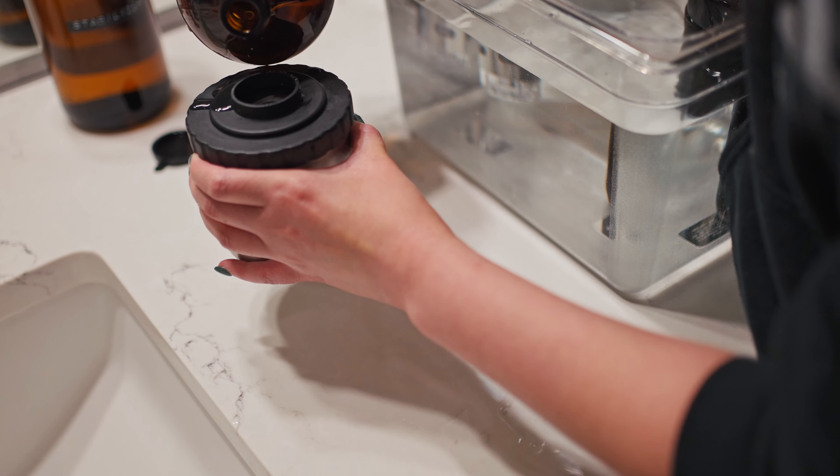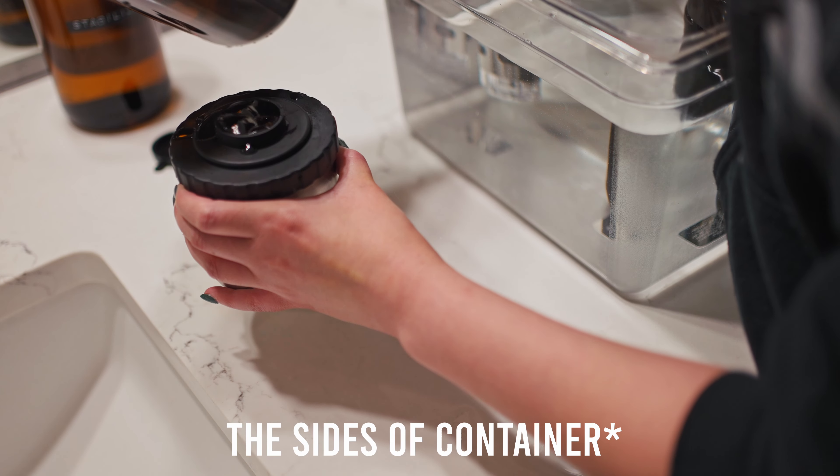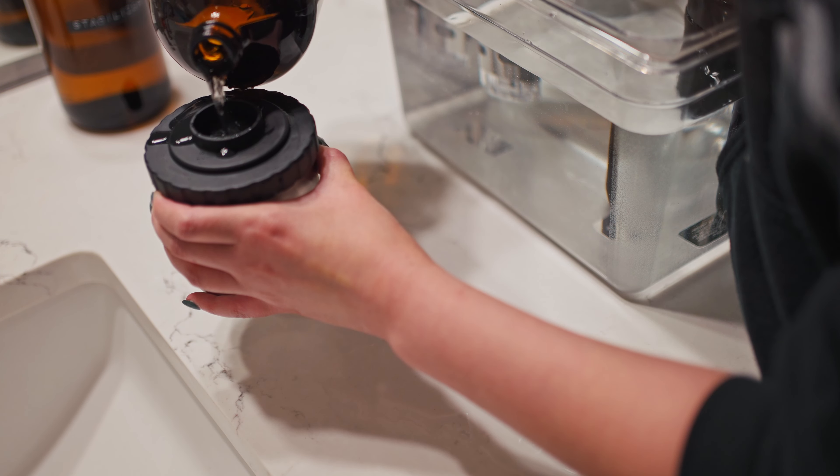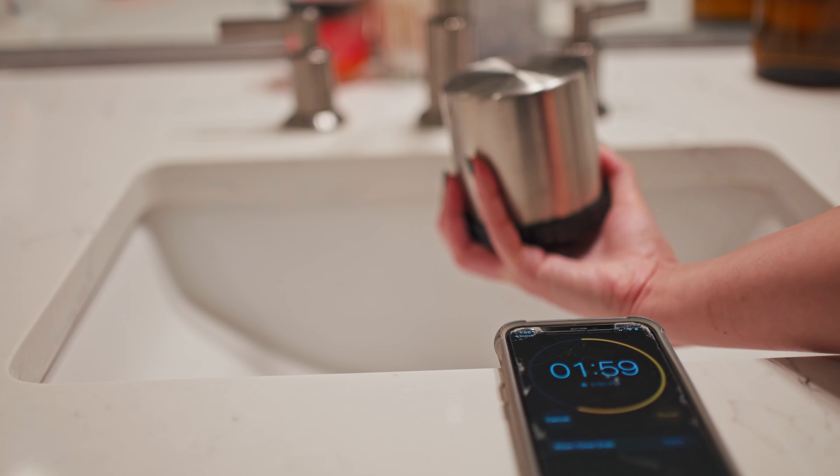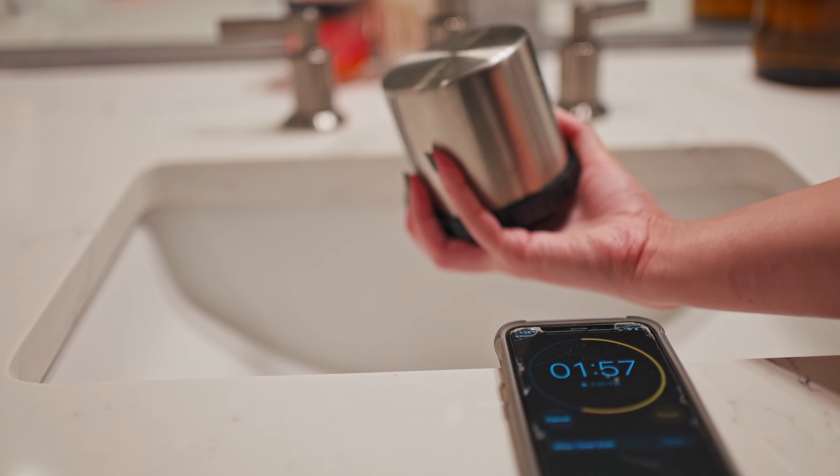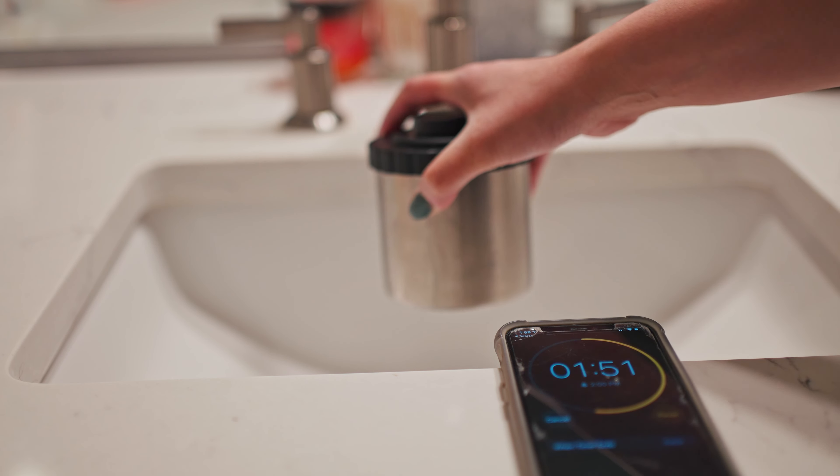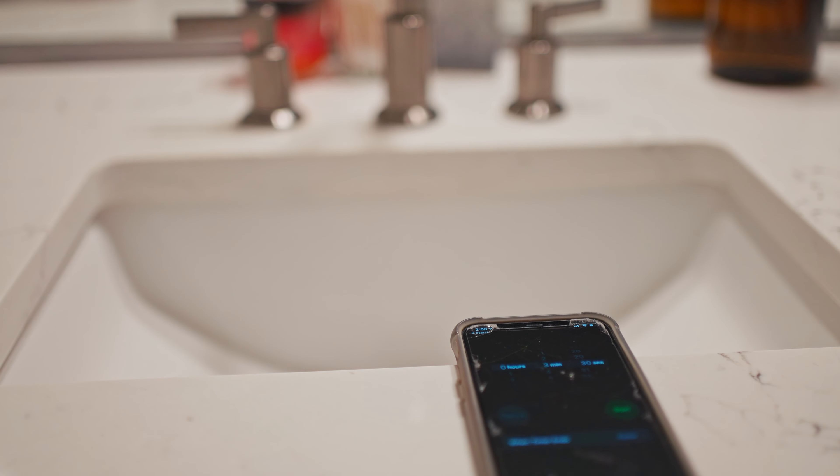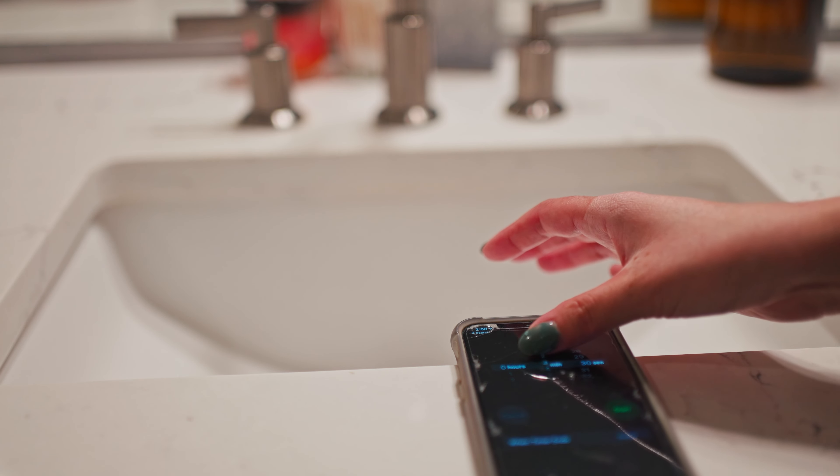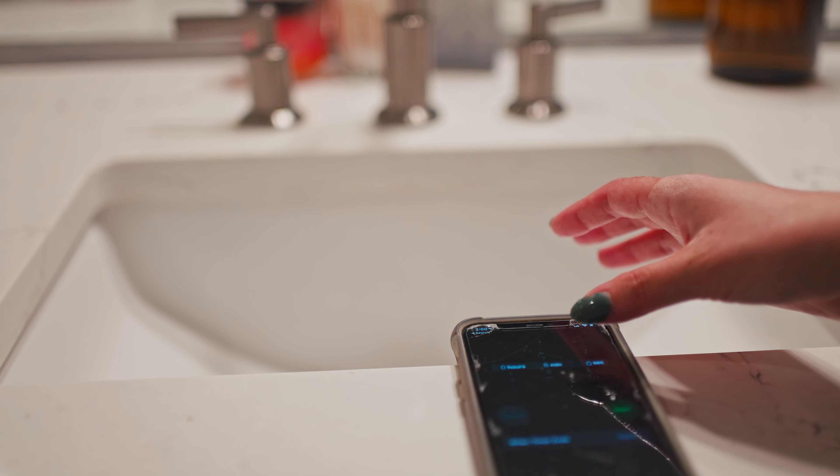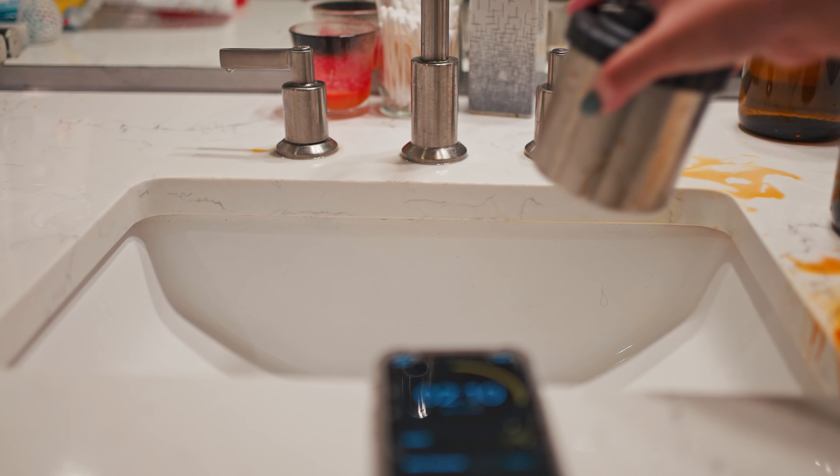It's time to pour our developer. The sides of the container will be warm. That's how I know it's filled all the way. Read your instructions carefully. My kit states to develop for three and a half minutes at 102 degrees and every 30 seconds do four inversion cycles. An inversion cycle is just turning it upside down like this and then back over. I highly suggest doing this over a sink. I found out my tank leaks a lot during this process. When that's done, you can pour out your developer back into its container.